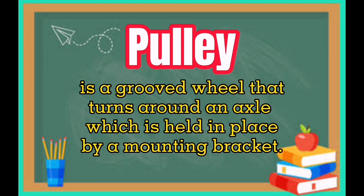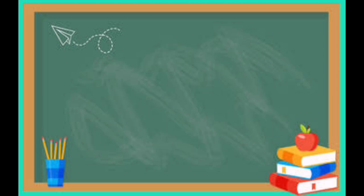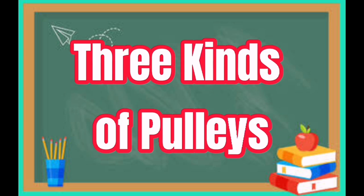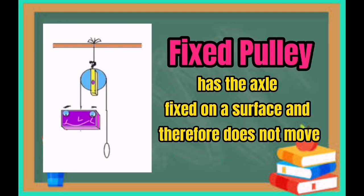Pulley. It is a grooved wheel that turns around an axle which is held in place by a mounting bracket. There are three kinds of pulleys. A fixed pulley has the axle fixed on a surface and therefore does not move.